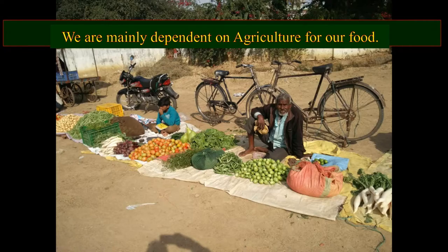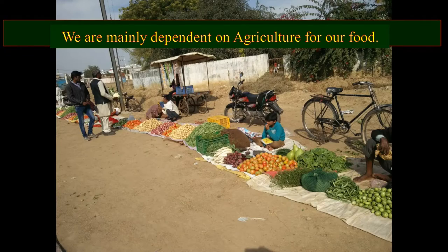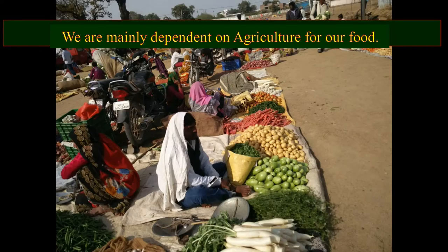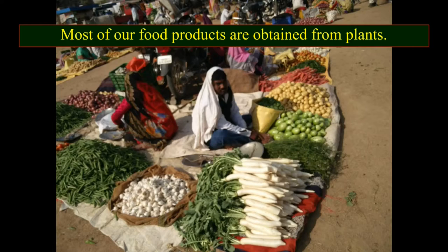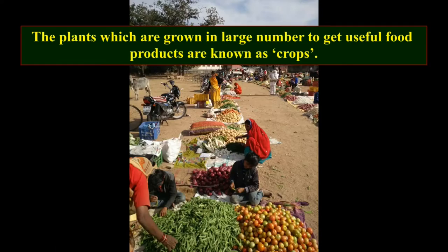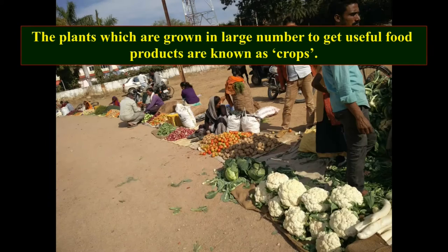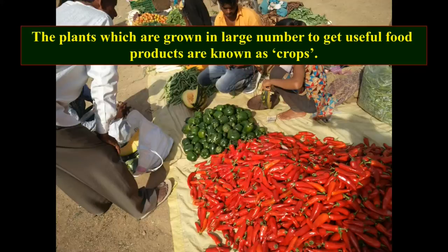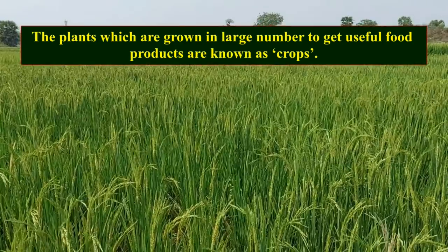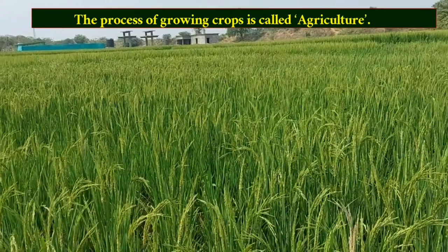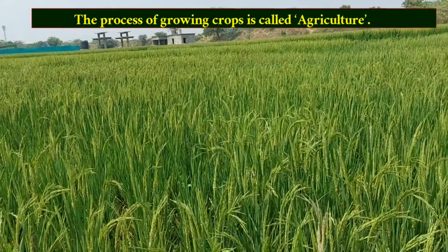We are mainly dependent on agriculture for our food. Most of our food products are obtained from plants. The plants which are grown in large numbers to get useful food products are known as crops. The process of growing crops is called agriculture.